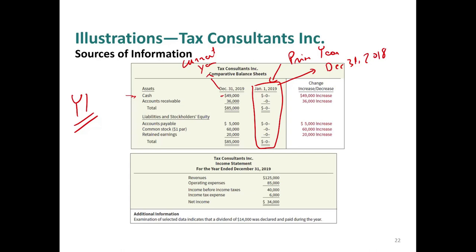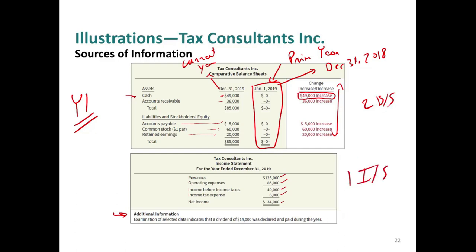Everything increased: cash went up to $49,000, accounts receivable is $36,000 (was zero), accounts payable $5,000 (was zero), common stock $60,000 (was zero), retained earnings $20,000 (was zero). The income statement shows revenues of $125,000, operating expenses of $85,000, income before taxes $40,000, income tax expense $6,000, and net income $34,000. Additional information indicates a dividend of $14,000 was declared and paid during the year.